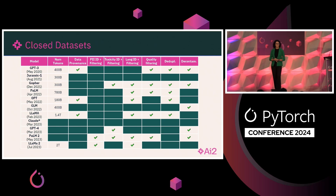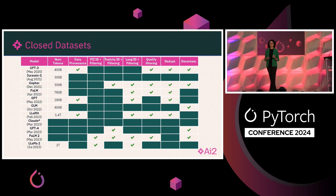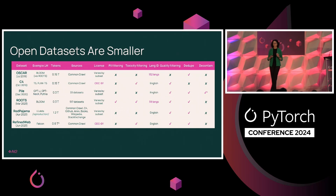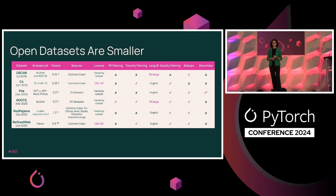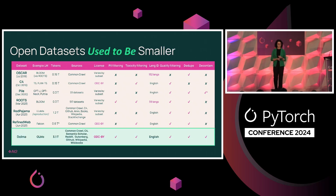Let me talk through the data process. I'm showing you a table — I don't want you to read all the details, I just want to highlight that there are a lot of unknowns about the datasets being used to train large language models. We pretty much don't have much information about what is going on inside the datasets. Of course, we have some open datasets, but in most cases they are either at a smaller scale, or they are mostly only looking at web data and ignoring other sources.